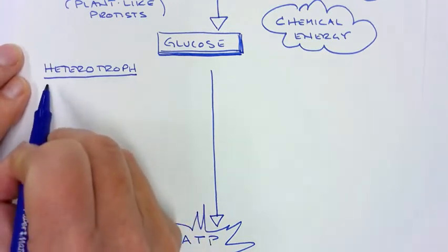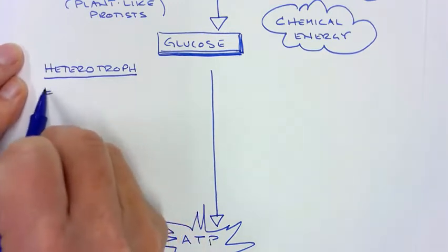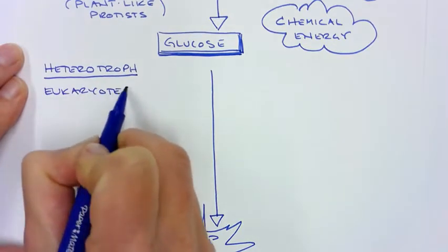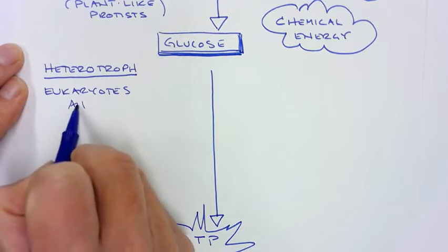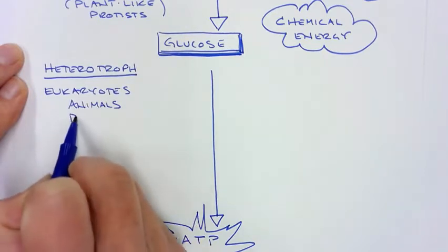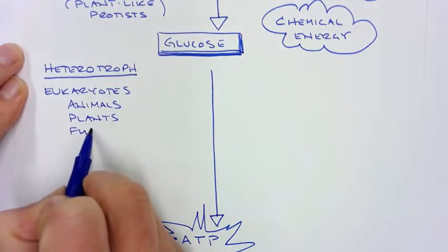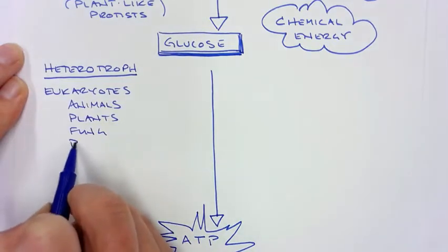These are basically all of our eukaryotes, which include animals, plants, fungi, and protists.